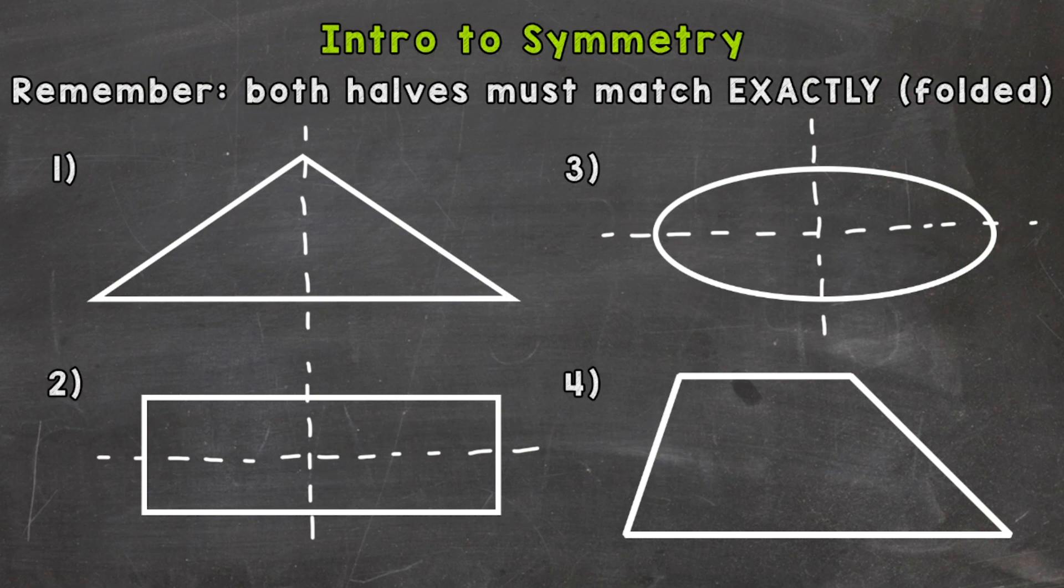On to number four. Let's try to find a line of symmetry. We'll start by trying horizontally, so side to side. If we were to fold that shape along that line, the halves would not match. So that is not a line of symmetry.